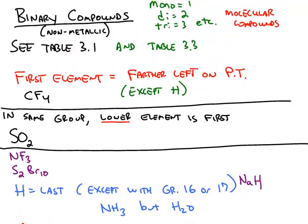Once you know the order of these binary compounds, the next thing is to name them. We're going to use prefixes, mono, di, tri, tetra, and so on, to tell how many of each element we have.